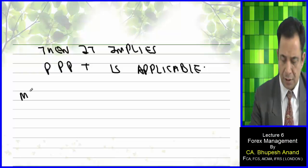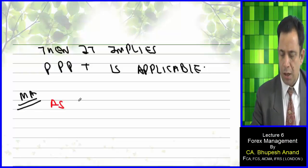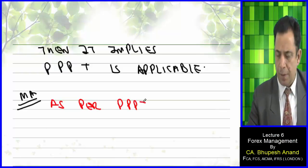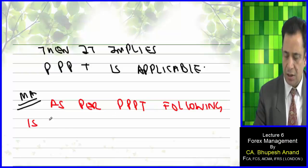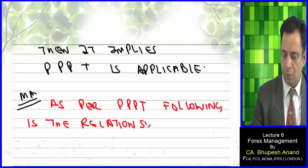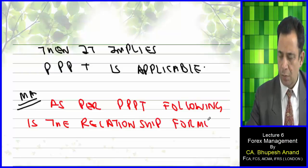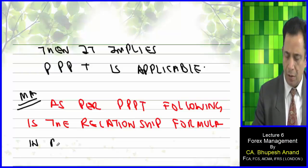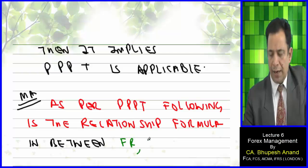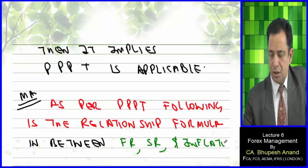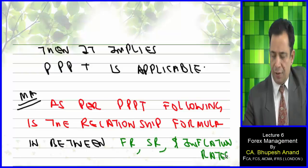As per Purchasing Power Parity Theory, the following is the relationship formula between forward rate, spot rate, and inflation rates.